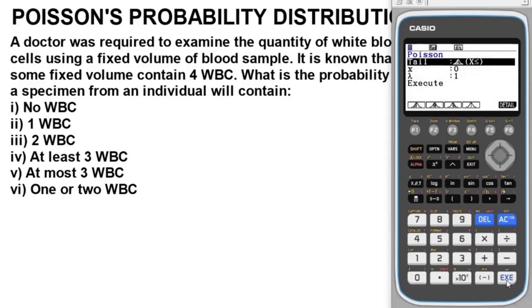Now this part is critical guys - when you miss this you won't get the entire solution, so pay attention. For this question, our x value will be the respective parameters: when there is no white blood cell, when there is one white blood cell, when there is two white blood cells, when there is at least three white blood cells, and the rest of them. Our lambda will be 4 white blood cells, since the fixed volume contains 4 white blood cells.